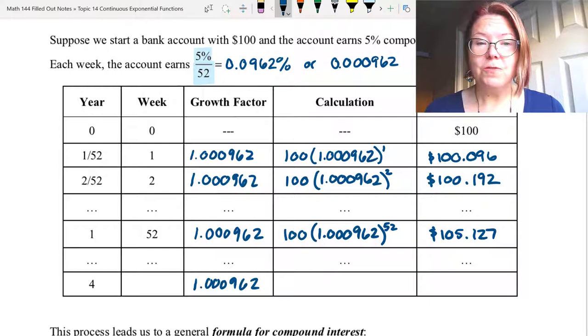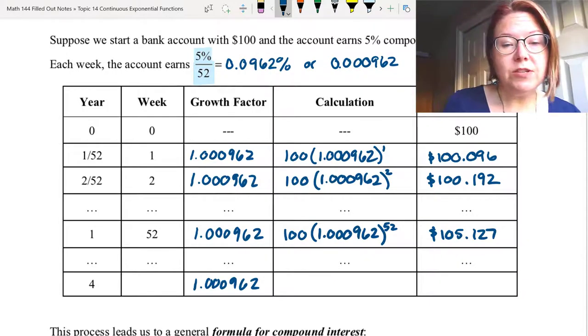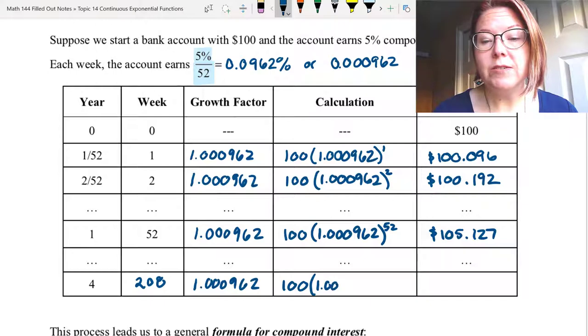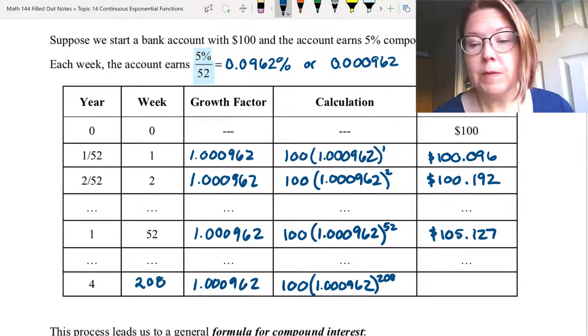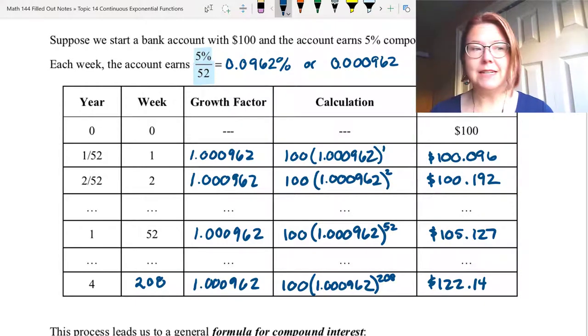And then finally, year four, that's going to be 52 weeks times four, which is 208 weeks. So the calculation is 100 times (1.000962) raised to the 208th power, or 122.14. This final one, I'm going to go ahead and round to the nearest cent.